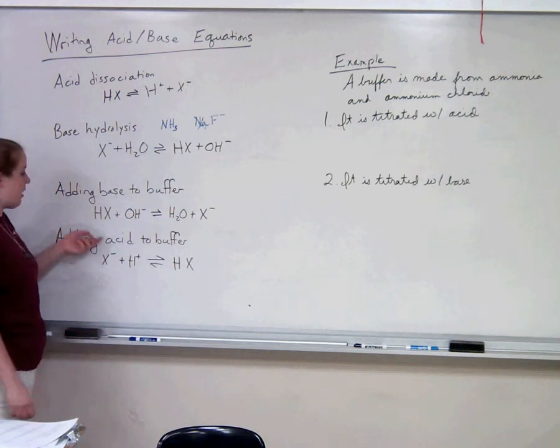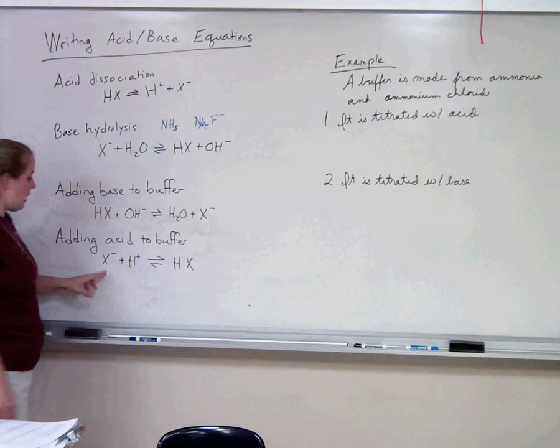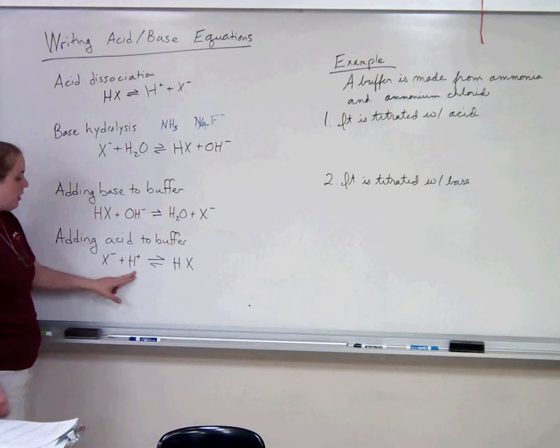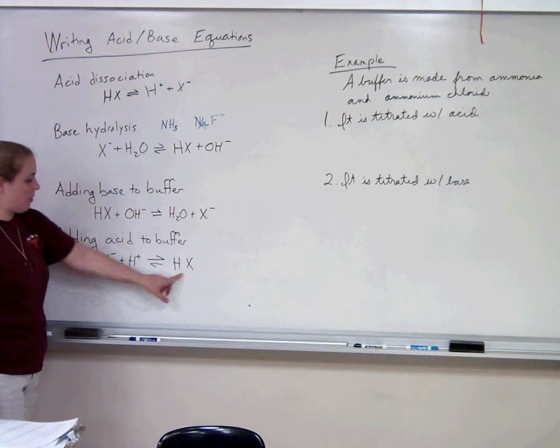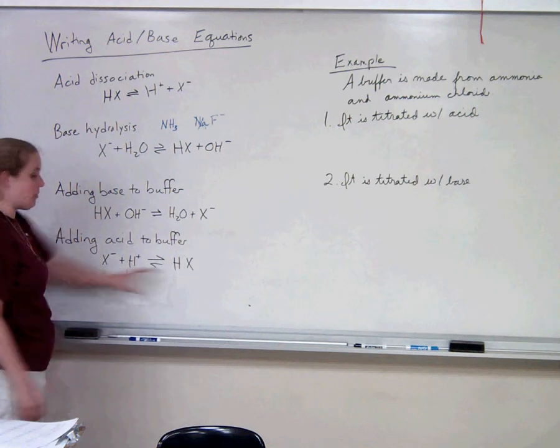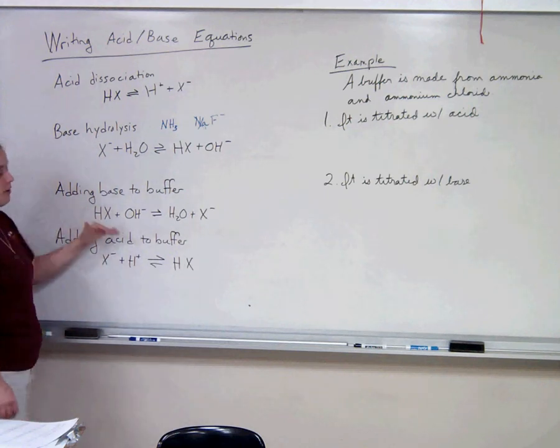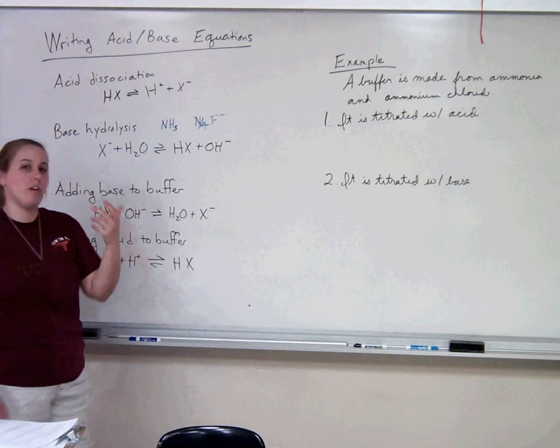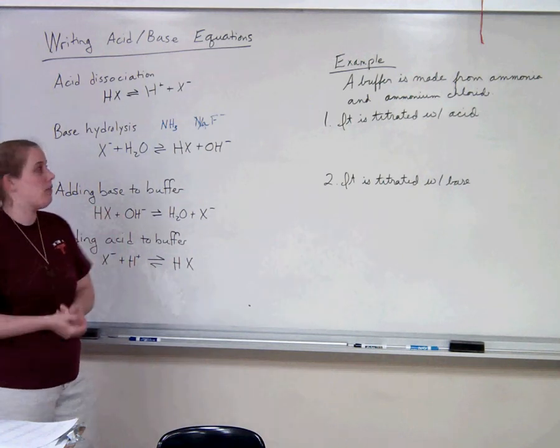If you add an acid, it's exactly the opposite. Now we're going to take our conjugate base and add the acid to it, and then it will form our weak acid. When you're dealing with a buffer, just think, what am I adding to this buffer? I'm going to add it to the opposite portion of the buffer.